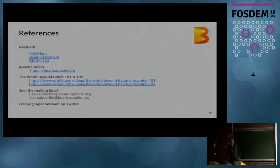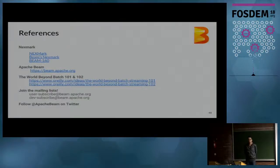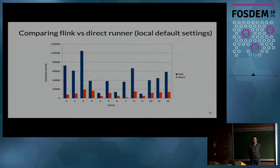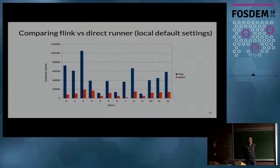Question from audience: Thank you for the talk. In the comparison of Flink versus Direct Runner, is this single-node performance? Answer: Yes, this is single-node performance because the Direct Runner is only local.